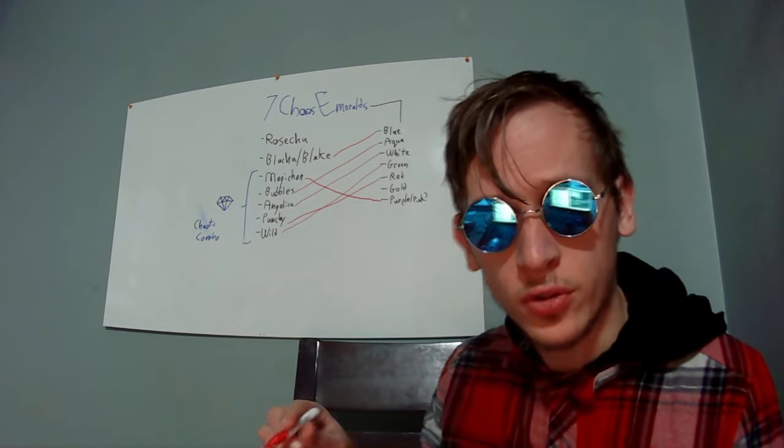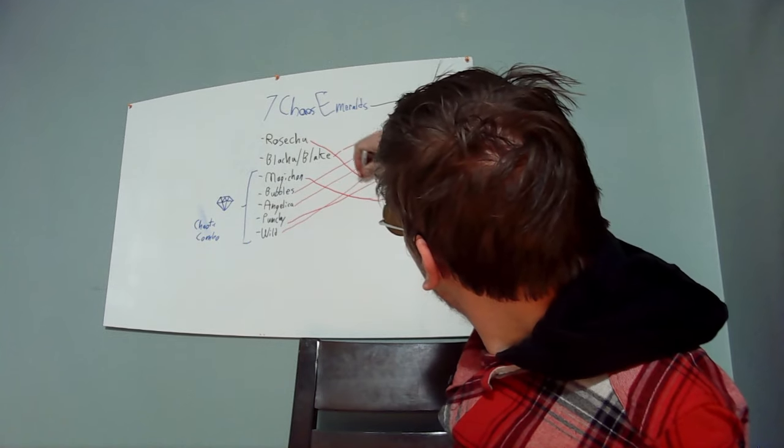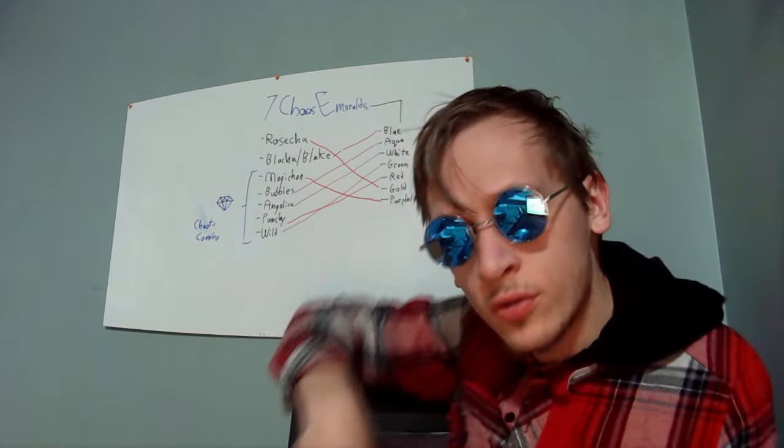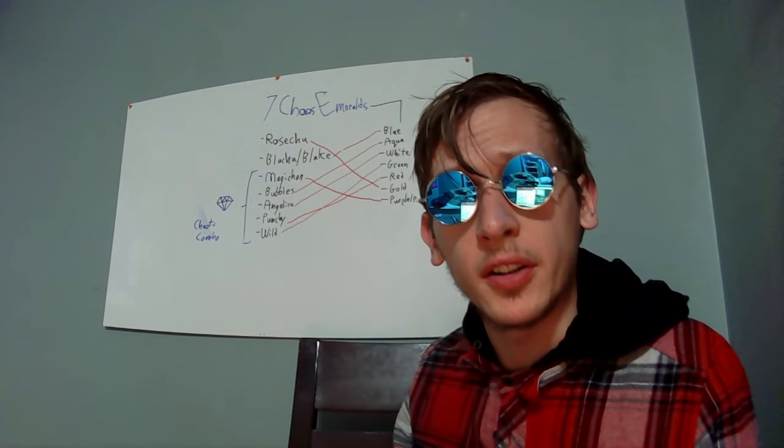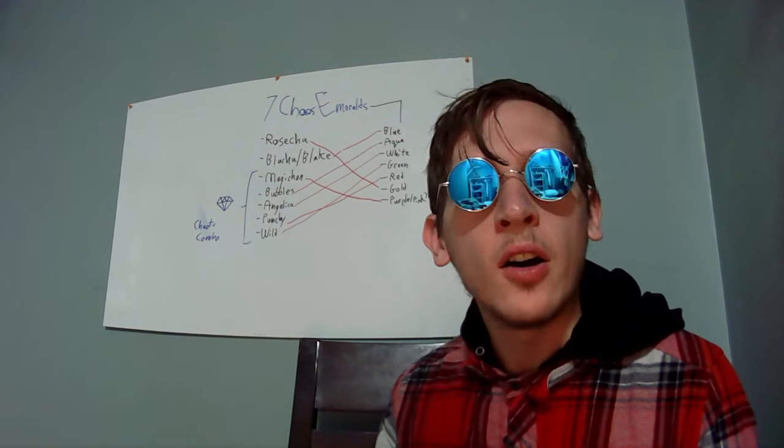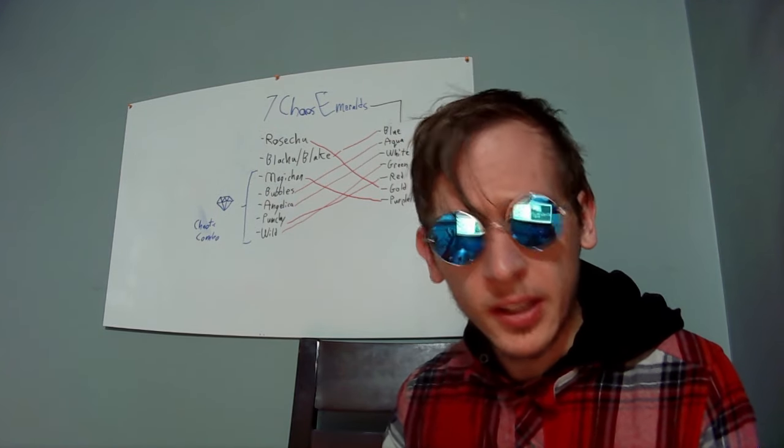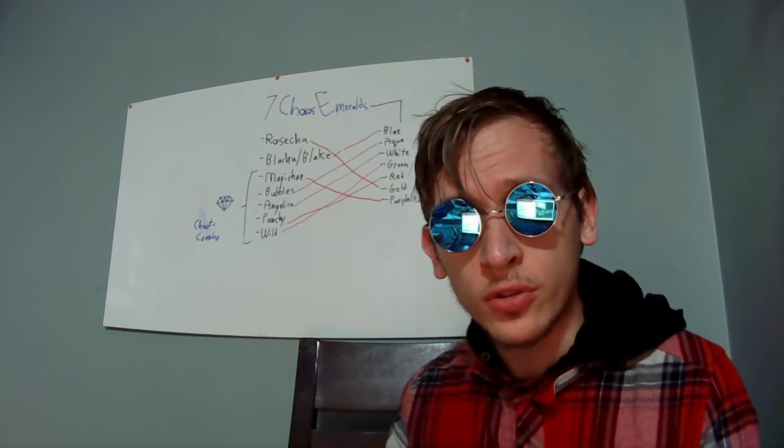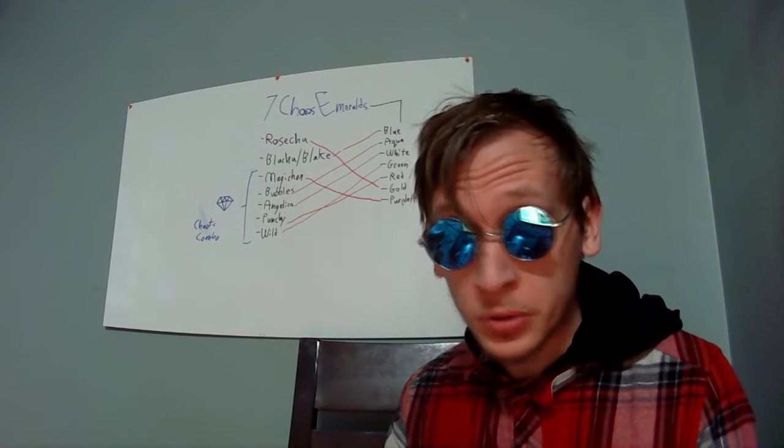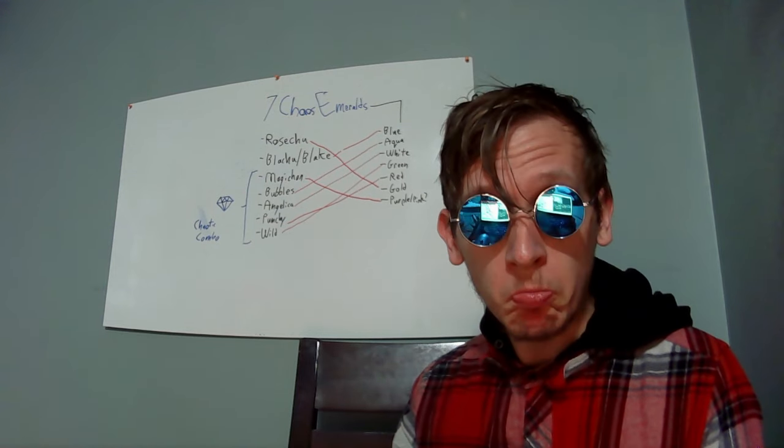Well, that just leaves us with Rosechu. Rosechu being represented by the gold chaos emerald. Now, again, I know what you're saying, how is he gonna make this stretch? Listen here. At first, I thought of making the lazy joke. Haha, Rosechu likes shopping. Gold? Credit card? American Express? Boom.